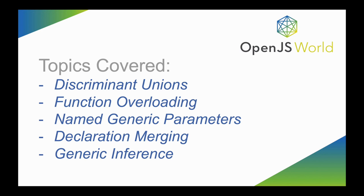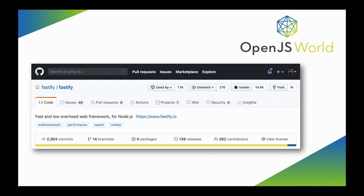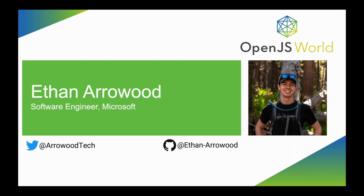Welcome back, I hope you enjoyed the code walkthrough. As a reminder, the topics we covered today include discriminant unions, function overloading, named generic parameters, declaration merging, and generic inference. All of these are actively in use in the actual Fastify type definitions, and there's plenty more information available in TypeScript's documentation. If you'd like to learn more about the TypeScript definitions or about Fastify itself, come check us out on GitHub — we're always accepting new contributors and contributions, and we're happy to include you in our community. Once again, my name is Ethan Arrowood, I'm a software engineer at Microsoft. Thank you very much for listening.